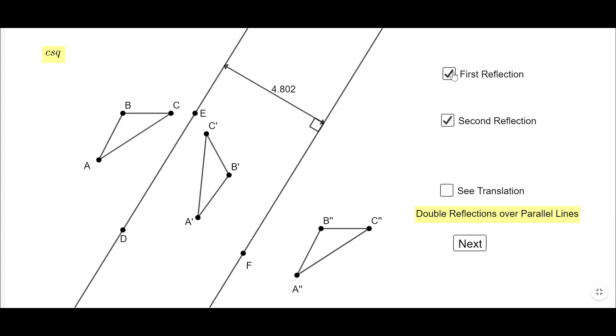Okay. Now I'm going to unclick the first reflection and now I'm going to look at these two triangles. And my question is, if we can find a unique transformation, translation, reflection or rotation